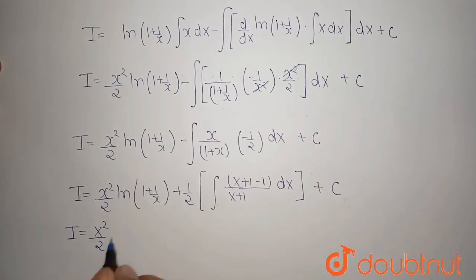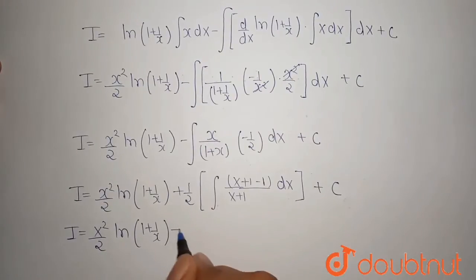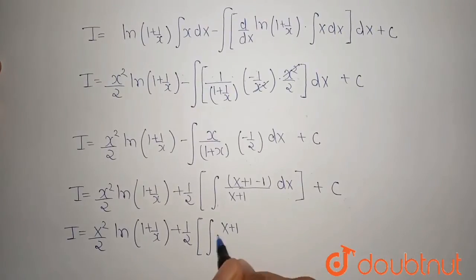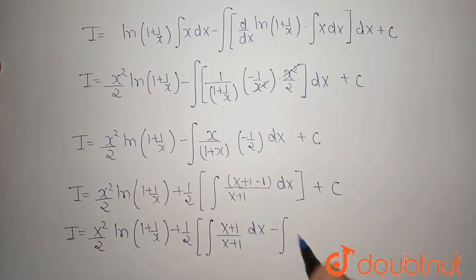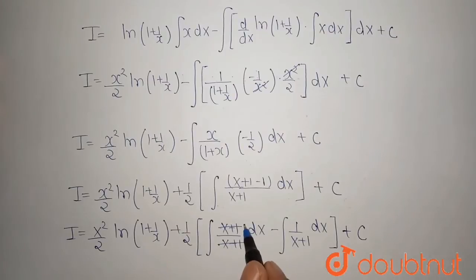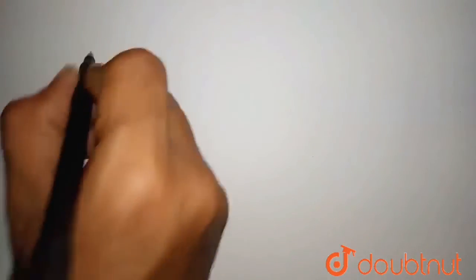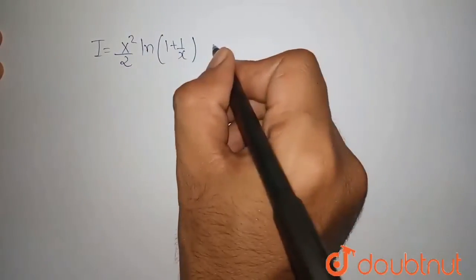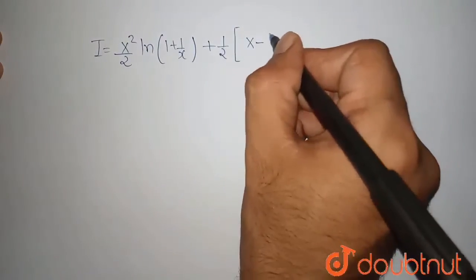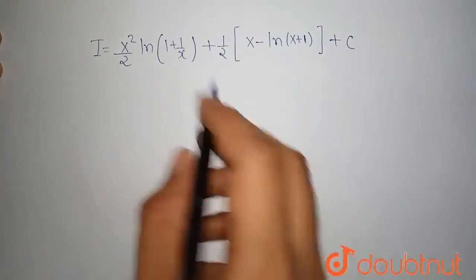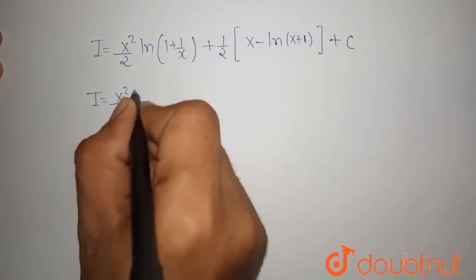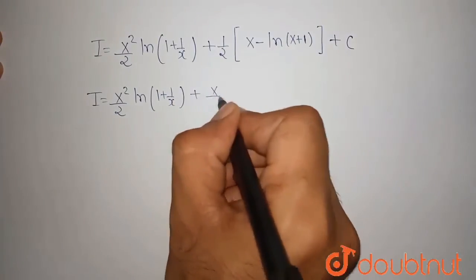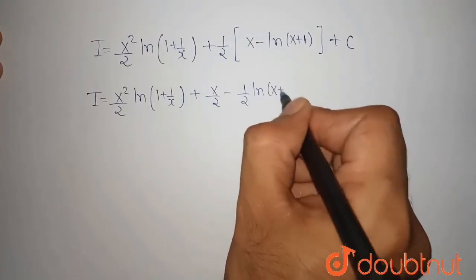Now, add plus 1 and minus 1 in the numerator and separate the denominator plus c. So it is written as: I equals x²/2 times ln(1 + 1/x) plus 1/2 times [integration of (x+1)/(x+1) dx minus integration of 1/(x+1) dx] plus c. The (x+1) terms cancel, so the integration of 1 is x and the integration of 1/(x+1) is ln(x+1). Multiplying through by 1/2, our final answer is x²/2 times ln(1 + 1/x) plus x/2 minus 1/2 times ln(x+1) plus c.